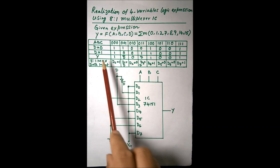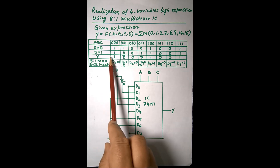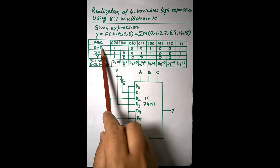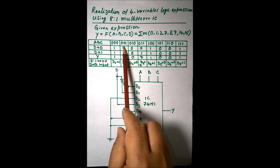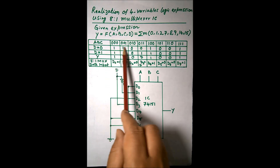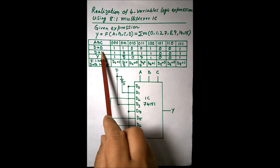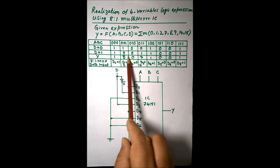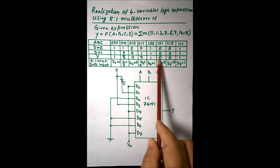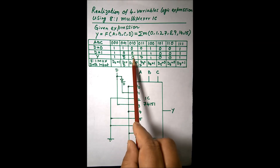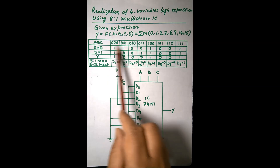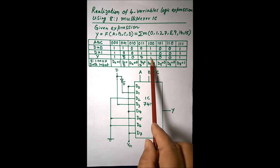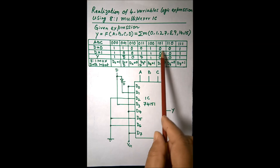We have substituted 1 wherever the minterms are present. Because we used an entered variable, wherever D values are the same the output will be 1. In some columns, whatever the value of D, the output is the complement — that is the entered variable table. So in some entries it is D-bar, in others it is 0, and where output is the same as D, it is D. Where both are 1 or both are 0, the entry is 0 or 1 accordingly.